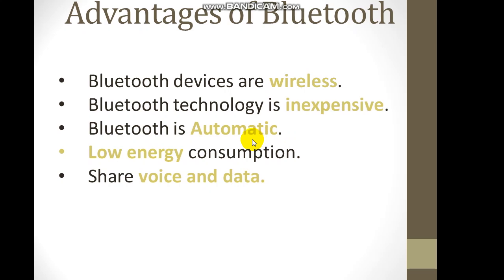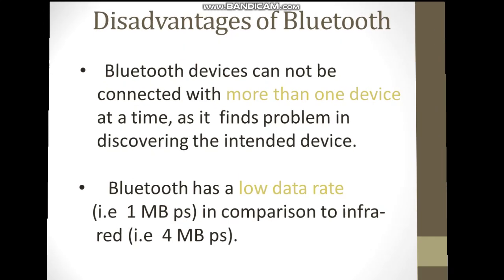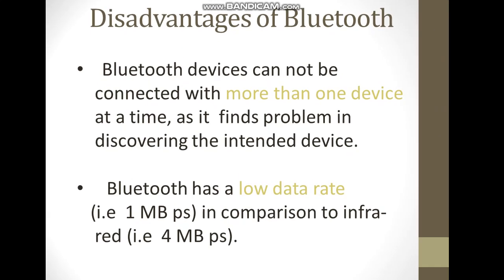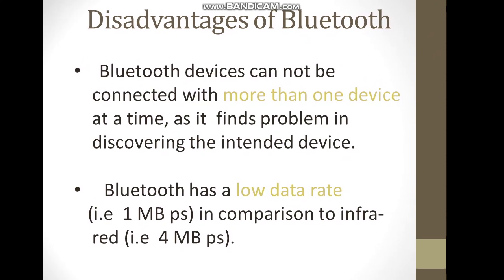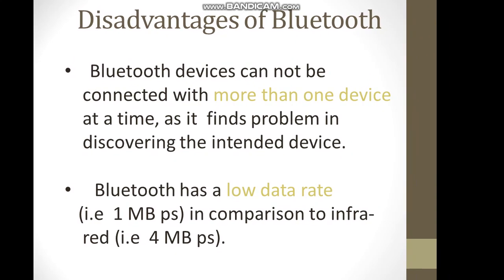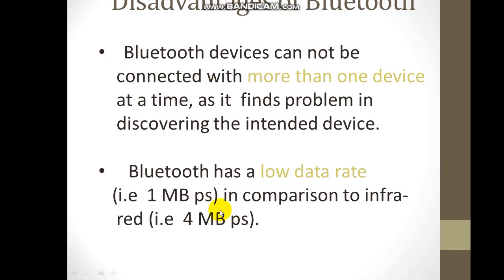You can share data and voice within 100 meters. The disadvantage is that a device cannot be connected to more than one device at a time, and Bluetooth has a low data rate of 1 Mbps compared to infrared's rate of 4 Mbps.